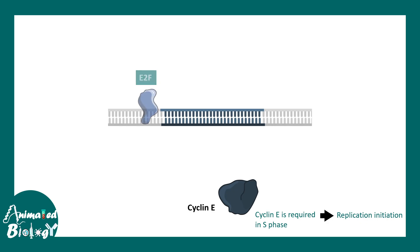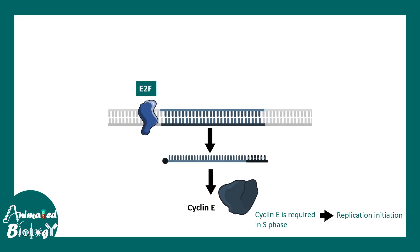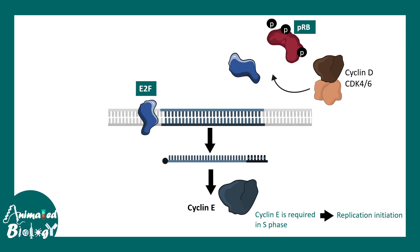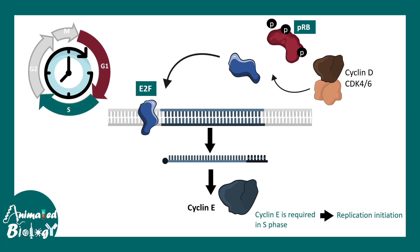When E2F binds to DNA, cyclin E mRNA is produced and cyclin E protein is made — this is important for replication progression. But pRB acts as an inhibitor by sequestering E2F and preventing it from binding to DNA. Cyclin D and CDK4 tell pRB to back off: when the environment is favorable, cyclin D/CDK4 phosphorylates pRB, allowing it to be removed from the E2F complex. This de-inhibits E2F, which is now free to bind DNA and allow cell cycle progression from G1 to S phase.